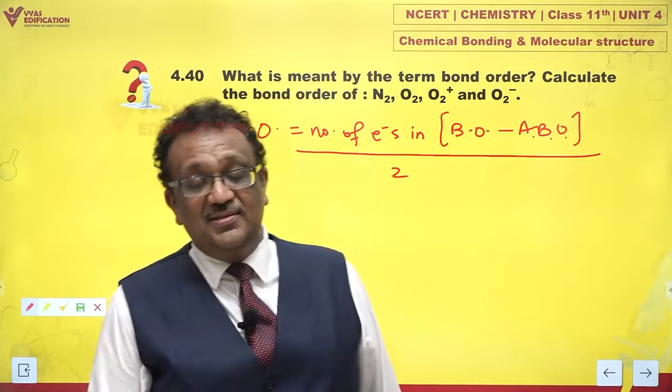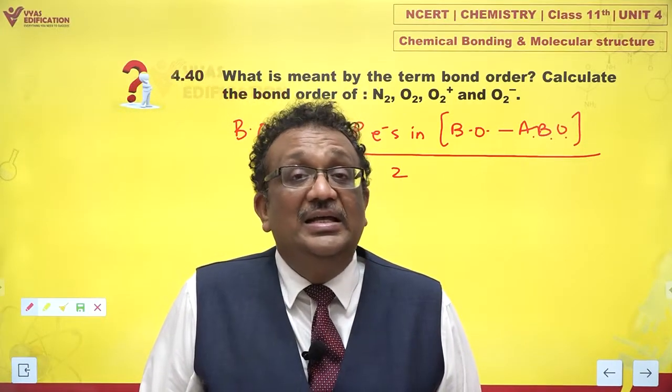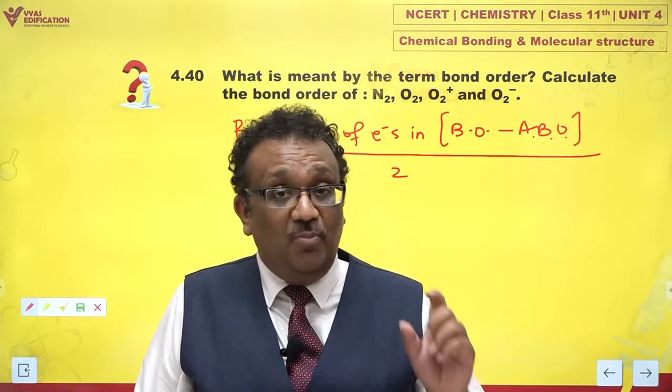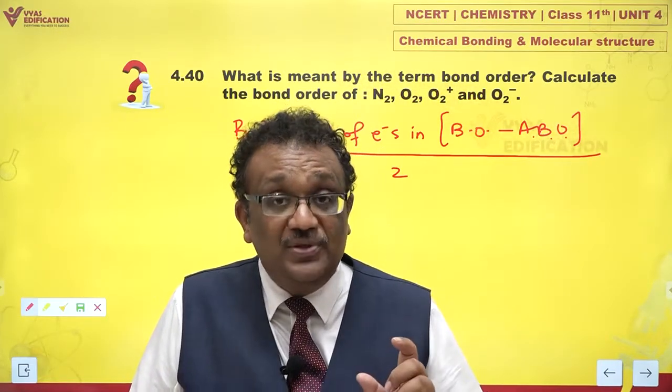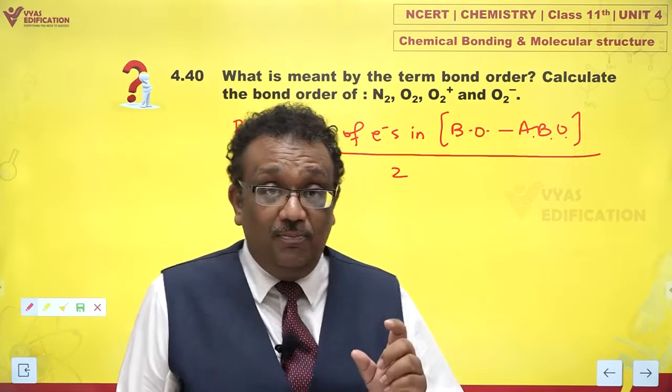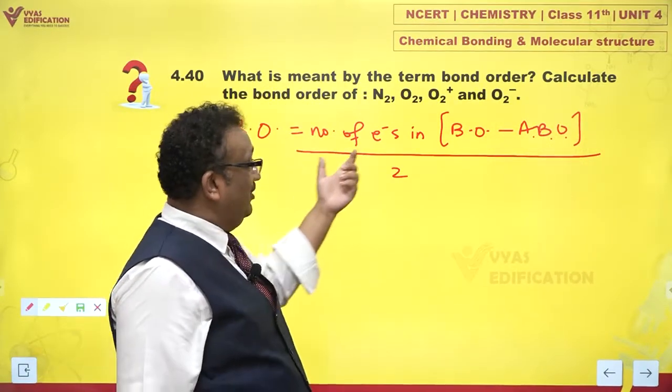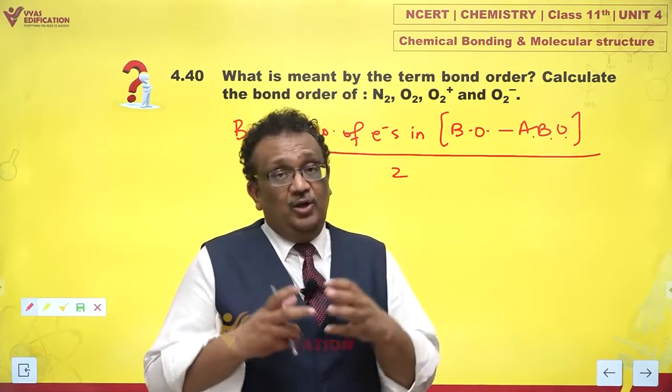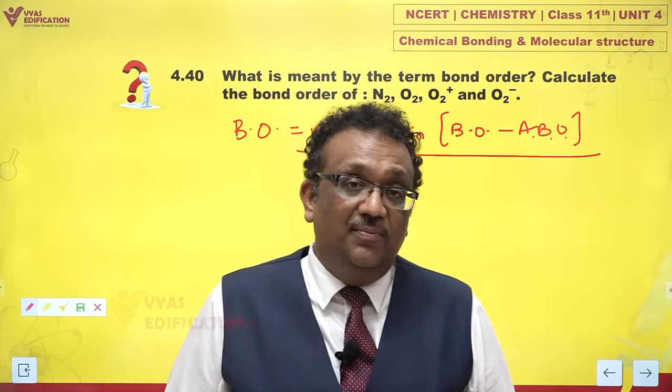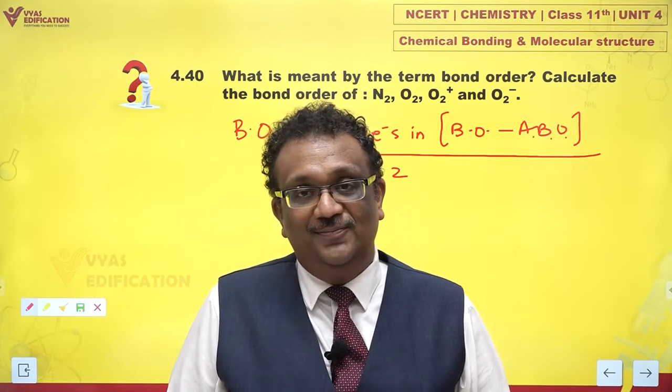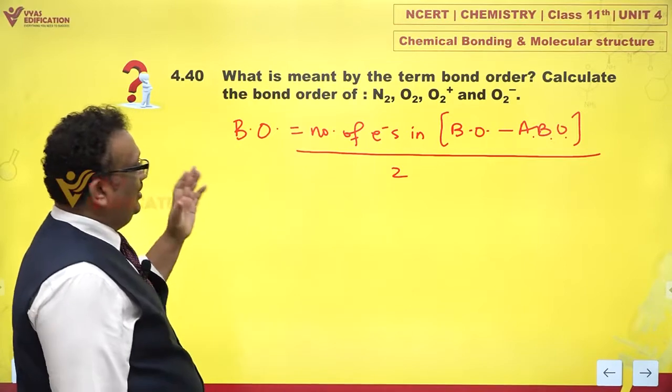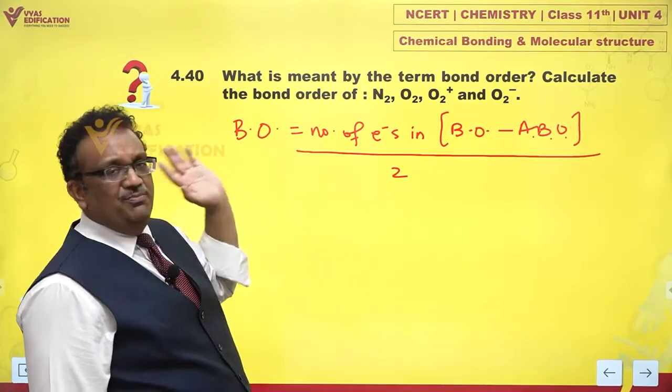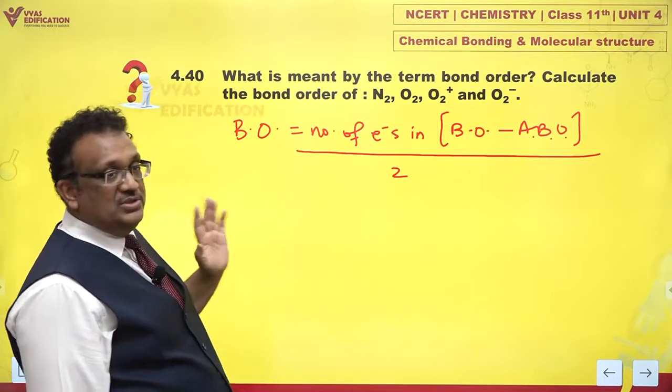I gave you two definitions. First one is a very fundamental physical definition. Let me repeat that. Bond order represents the number of electron pairs shared between two atoms which are joined together by a covalent bond. How do we calculate that? We calculate by using MO theory. We have a very simple and beautiful formula.